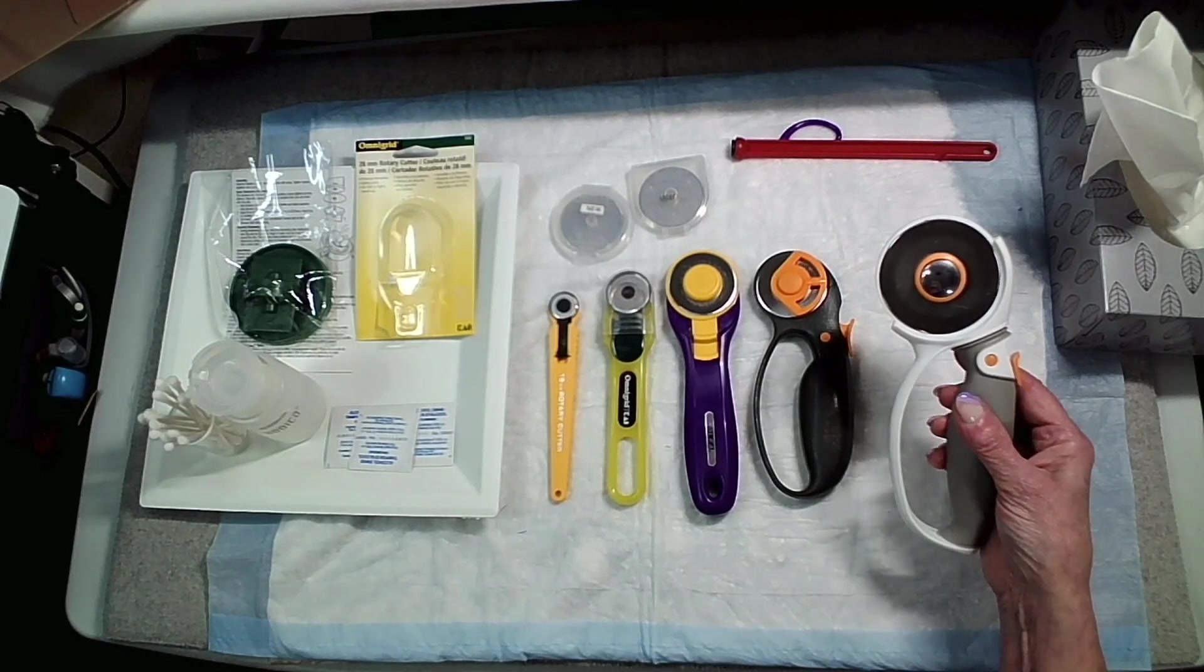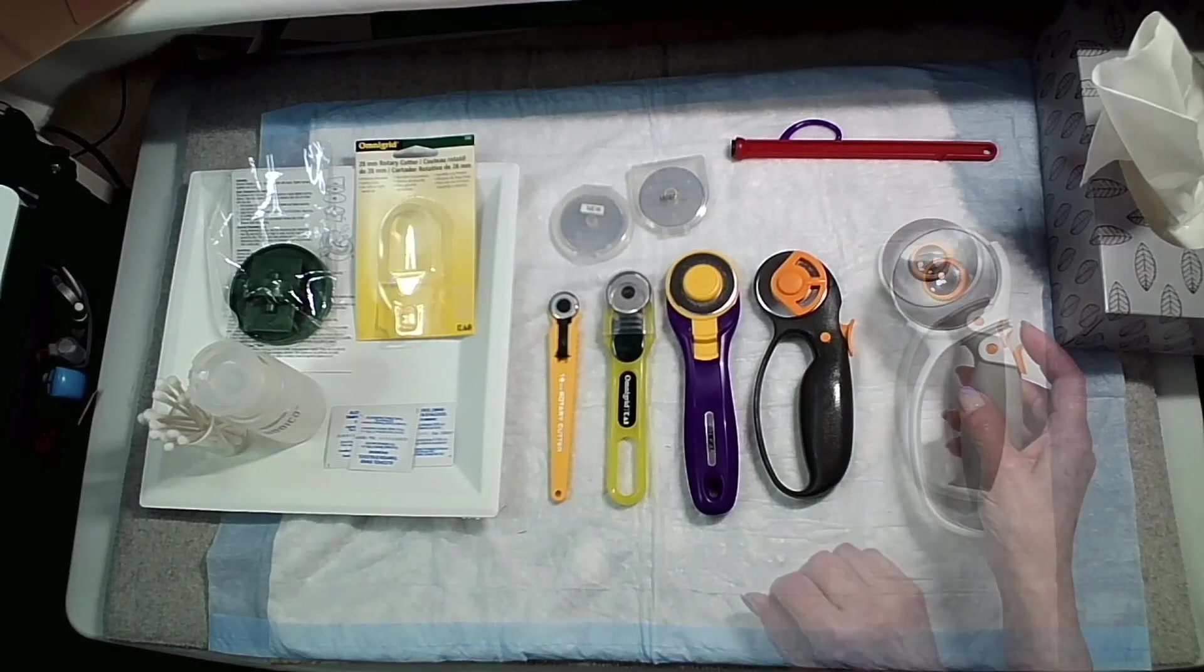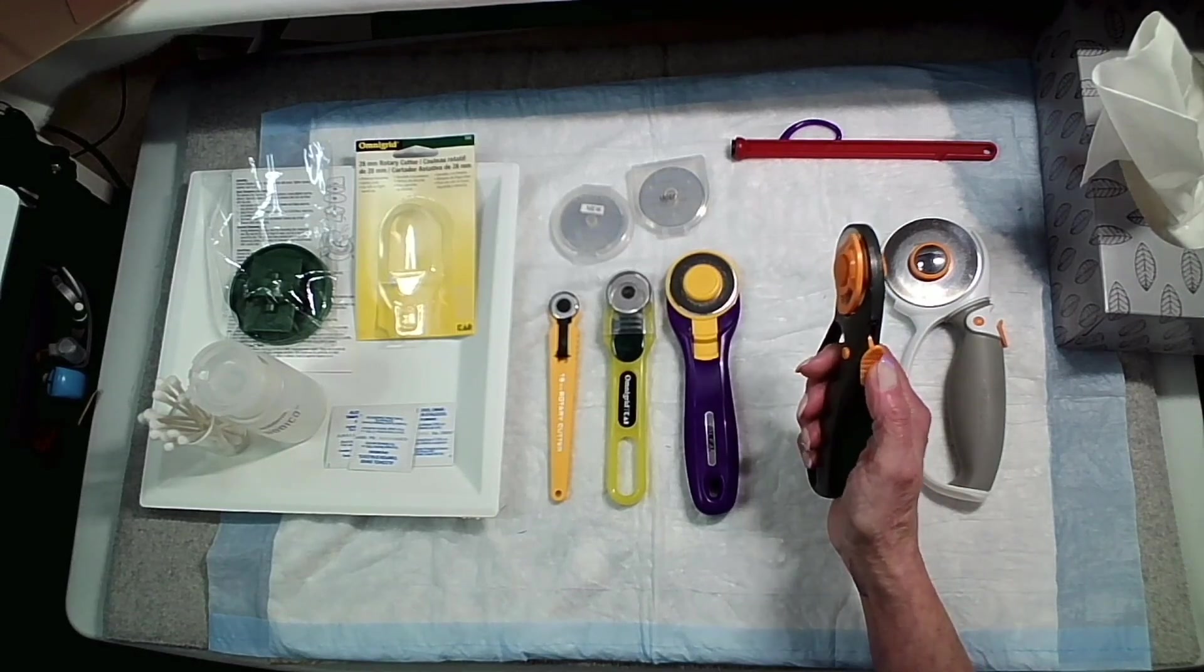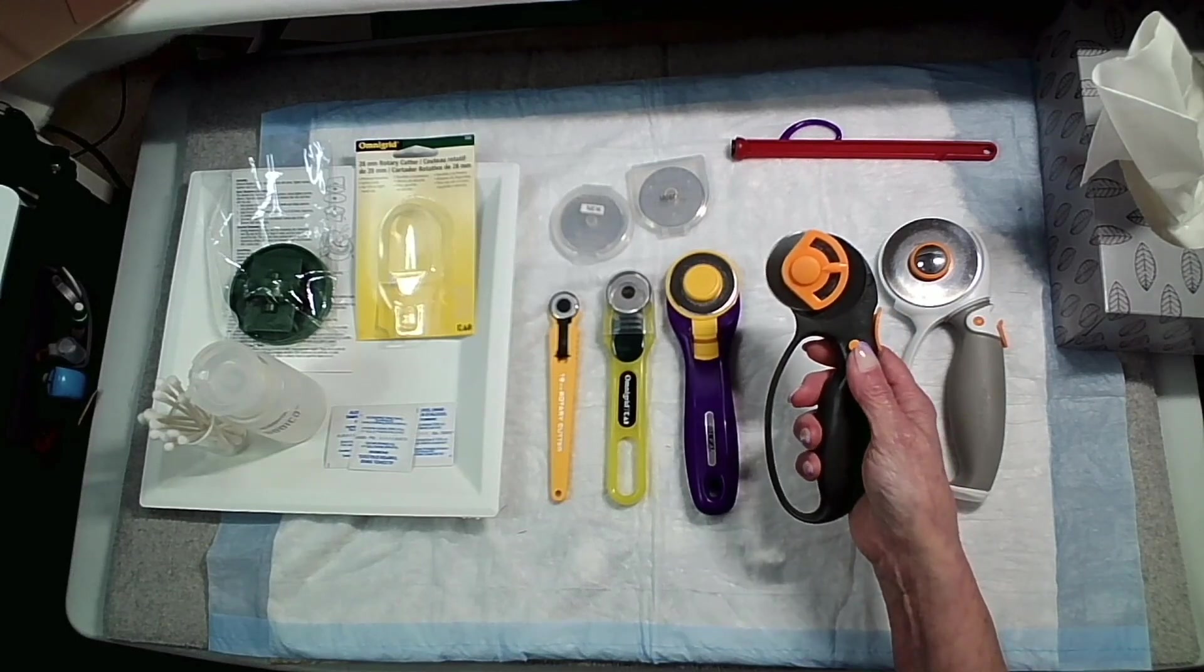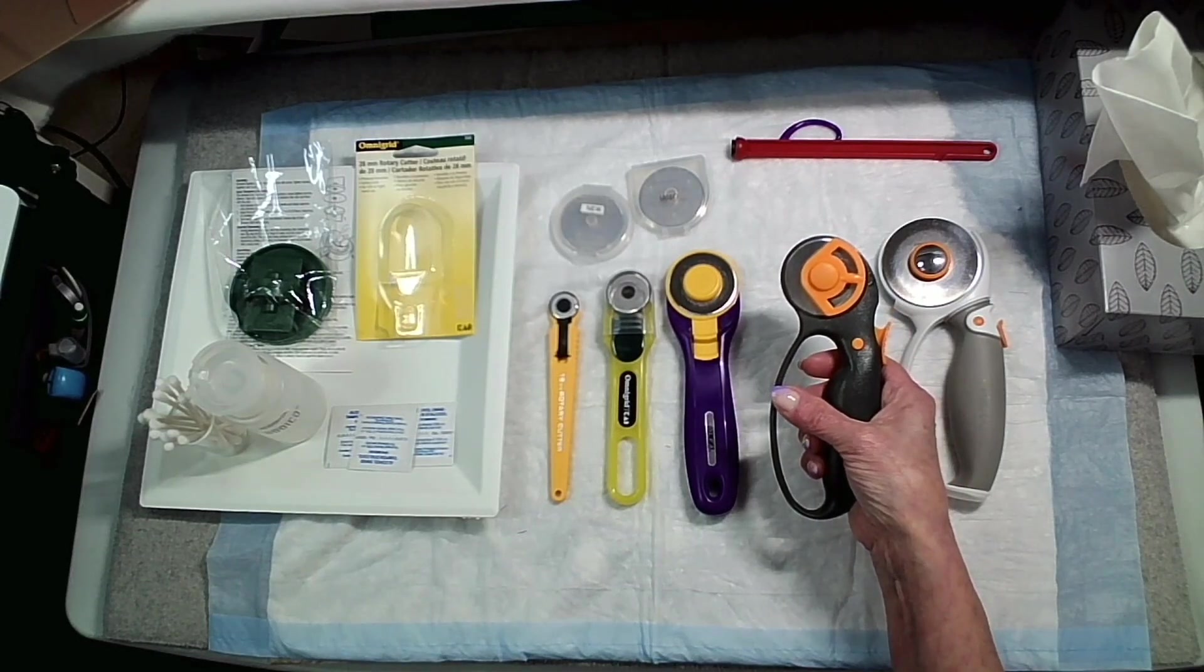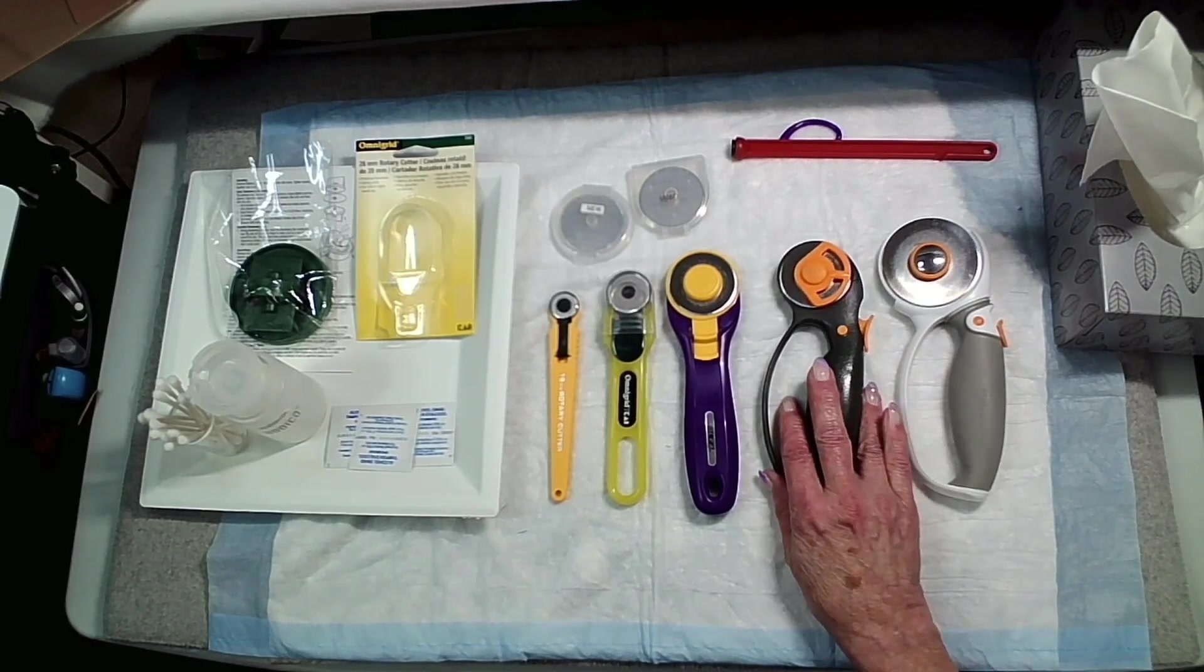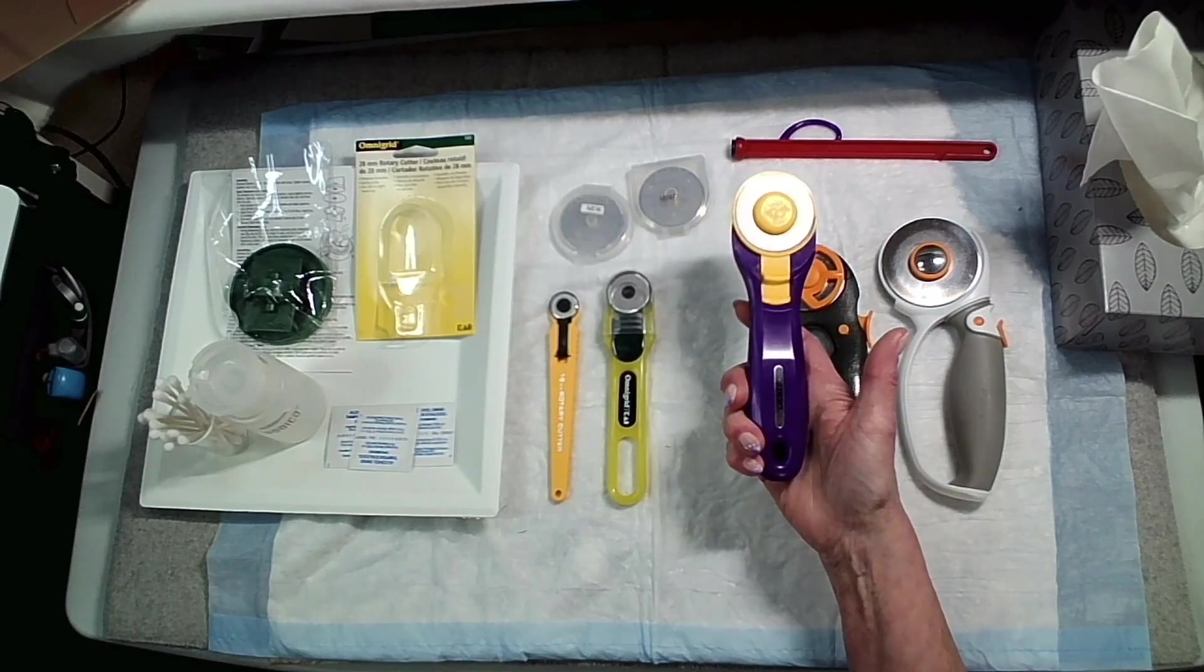The 60 millimeter one I use mainly for cutting through several layers of fabric and also cutting my batting. The next one is another Fiskars and again the rotary blade is retractable by pressing the button. It'll snap back into place.